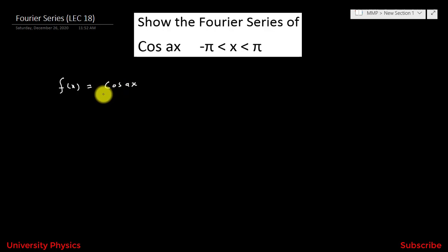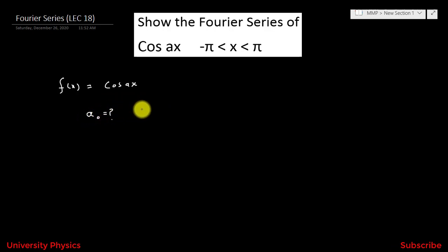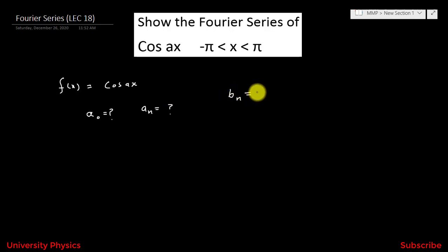We know that cos(ax) is an even function. Therefore, we have to find the values of a0 and an. We know that in the case of an even function, the value of bn is equal to 0. So we need to find a0 and an, then substitute into the Fourier series equation.